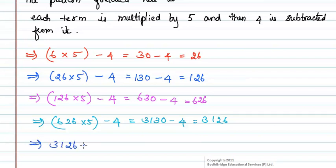Finally, 3126 is to be multiplied by 5 and 4 is subtracted from it. We will get 15,630 minus 4 and it is equal to 15,626.